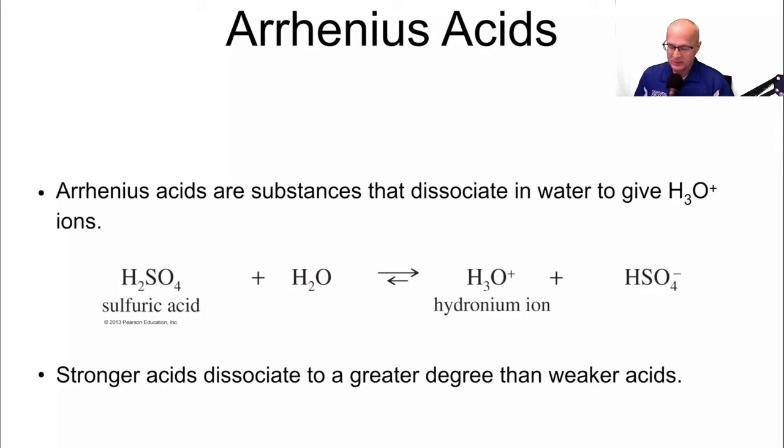Arrhenius acids. These are just definitions of acids. Arrhenius acids are substances that dissociate in water to give you hydronium ions. Essentially they make H plus in water.